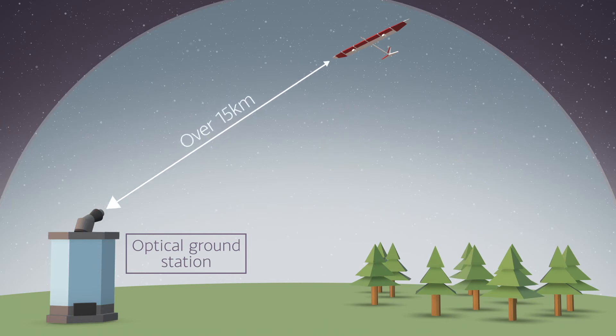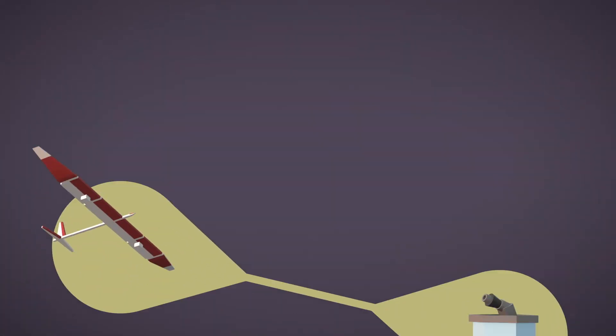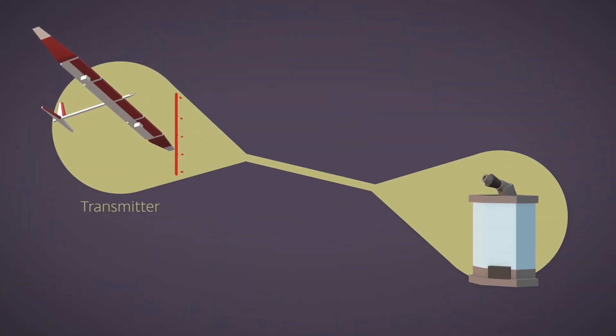The transmitter is over 15 kilometers away from the receiver. The optical beam diverges, meaning the size of the beam on the ground is greater than the telescope diameter. The transmitter combines optical signals and directs them at an optical ground station. The optical ground station then separates them to measure individually.